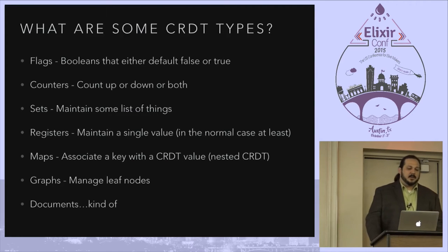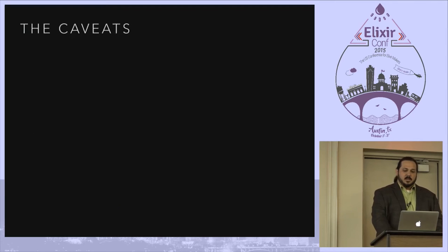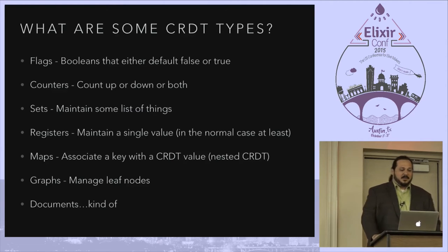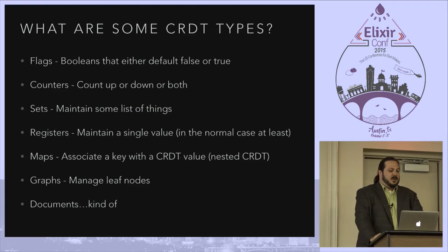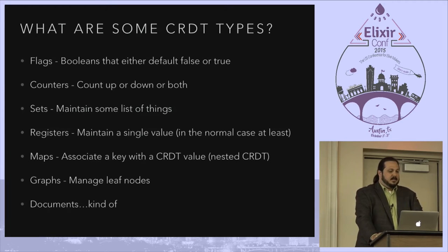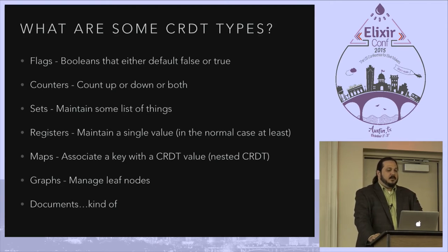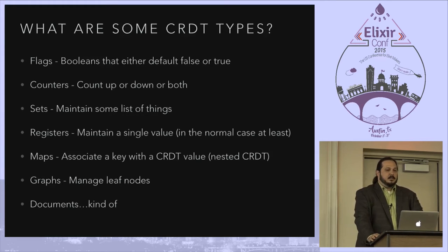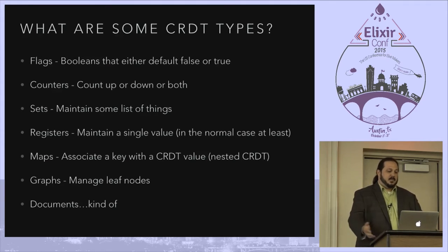So what are some common CRDT types? You've got flags — booleans that are either true or false. There are counters that go up or down. Sets maintain some lists. There are registers which maintain one thing most of the time, some retaining more in special cases. There are maps which associate a name or term with a value. Maps have the interesting property that many of them can nest CRDTs, meaning you can nest maps within maps and create very large, rich objects that you can pass to another system with all your updates well preserved.